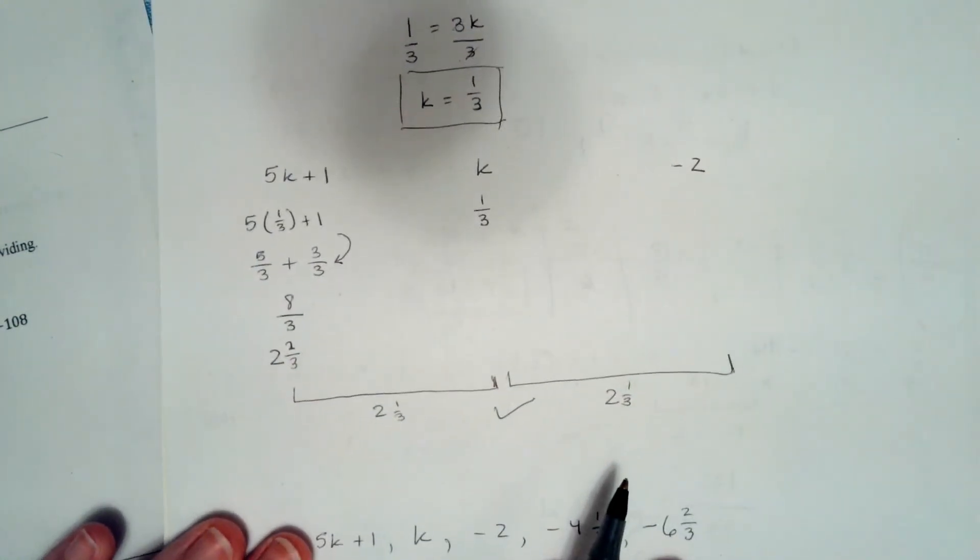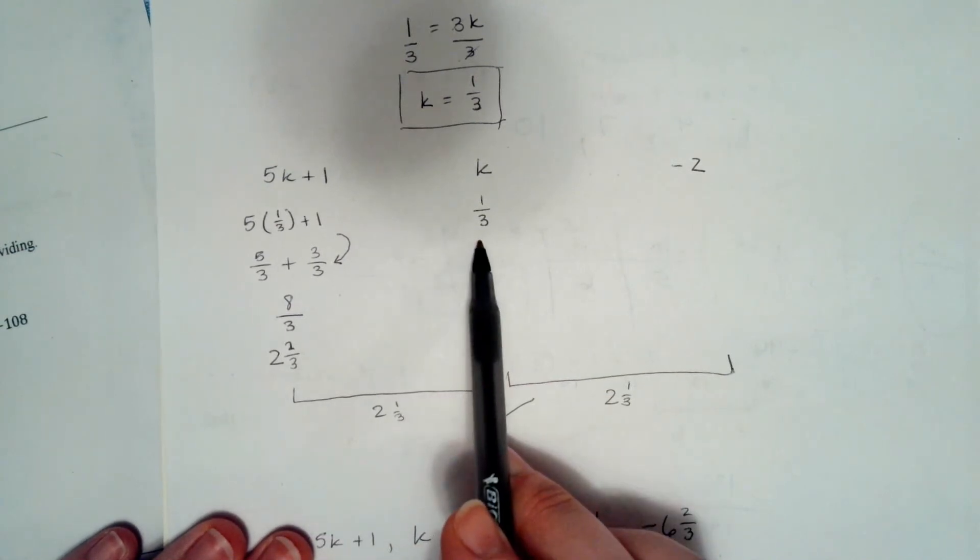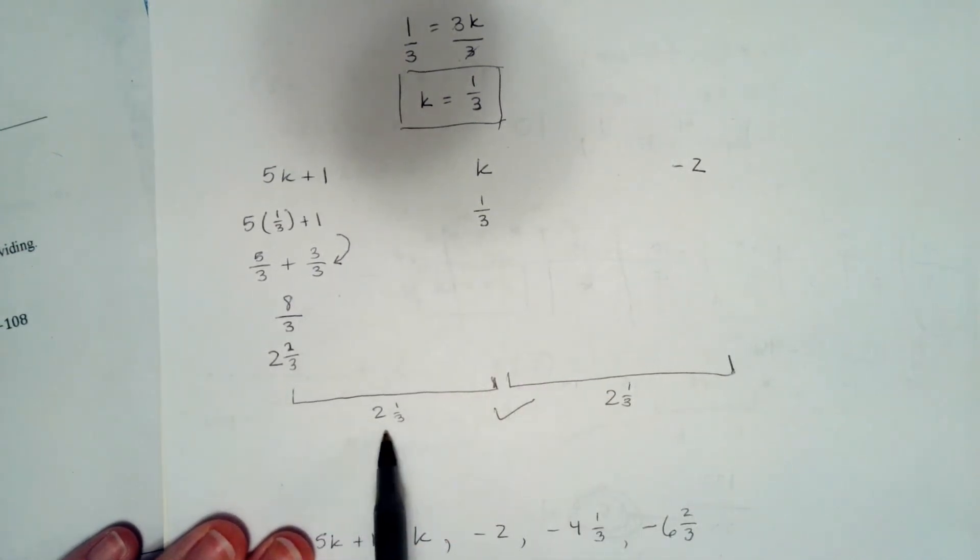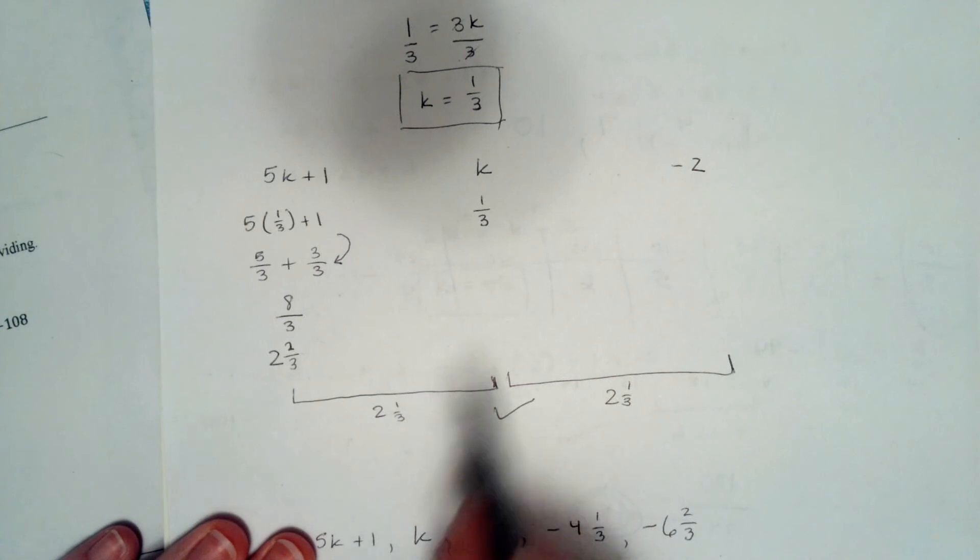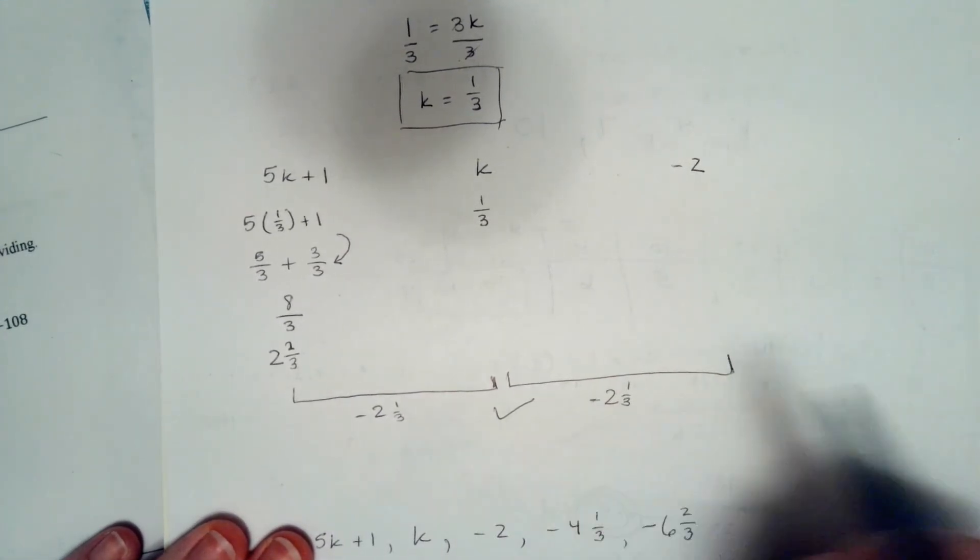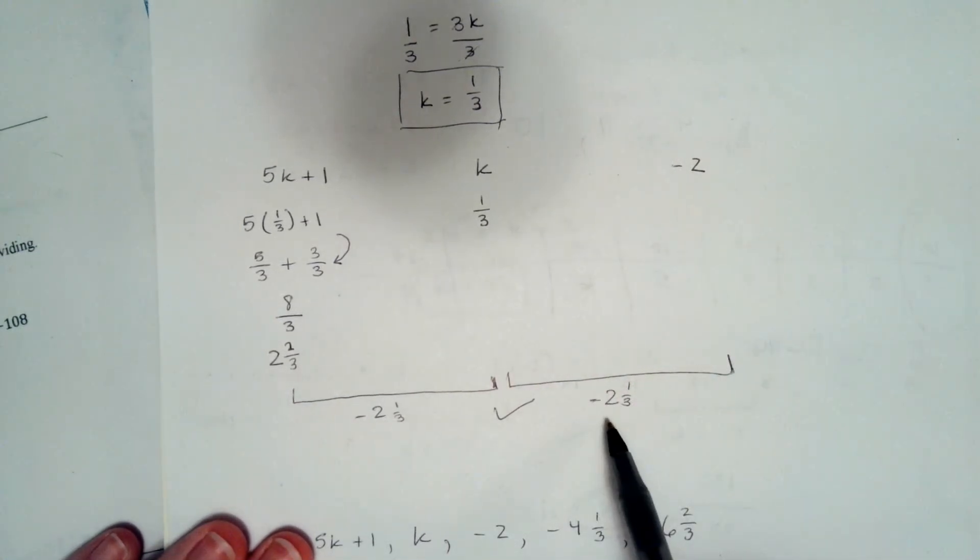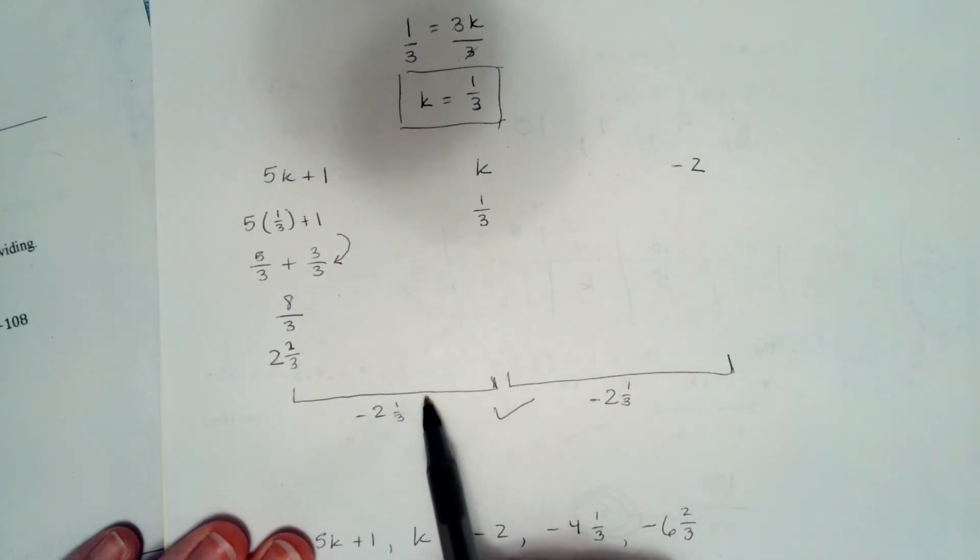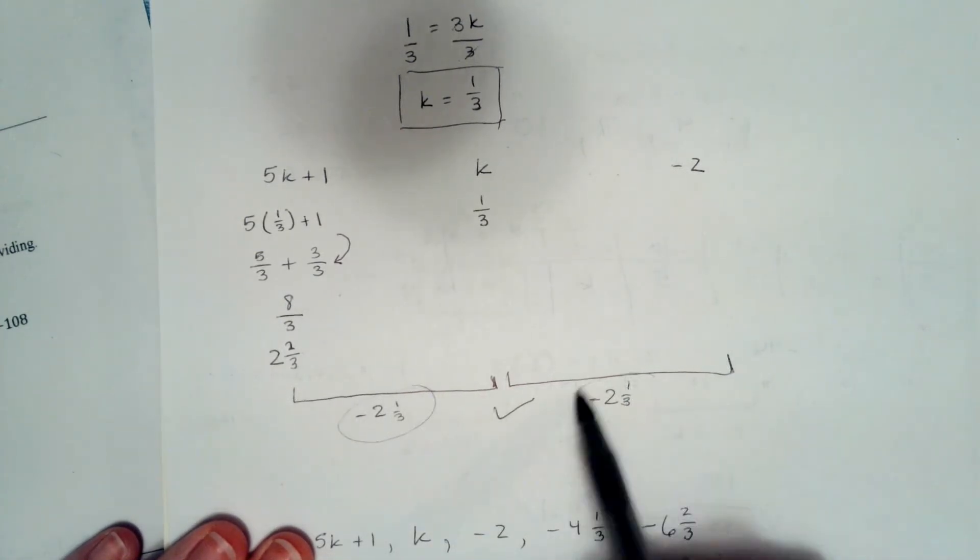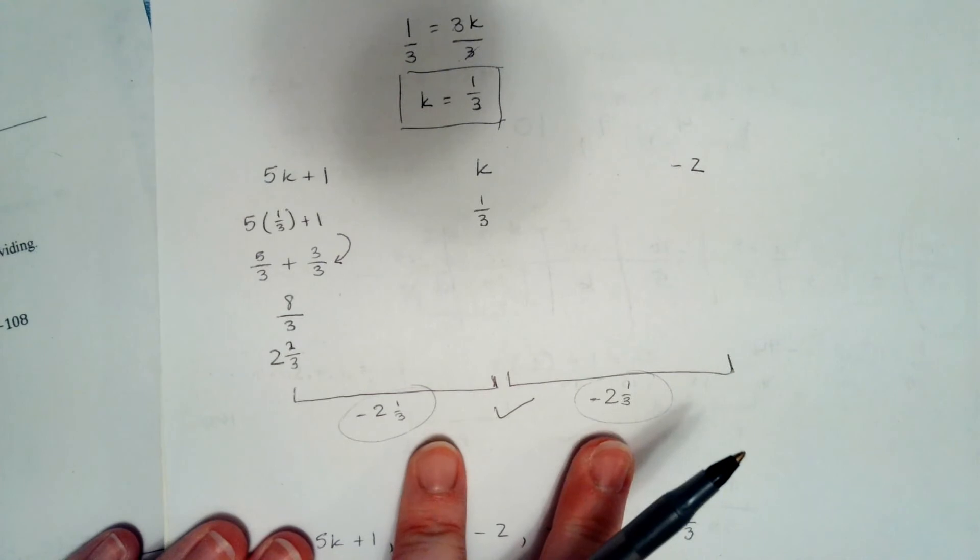So if you look at the distance between 2 and 2 thirds and 1 third, it's a difference of 2 and 1 third in the negative direction. The difference between 1 third and negative 2 is also 2 and 1 third. So we know that our k is correct because these differences match.